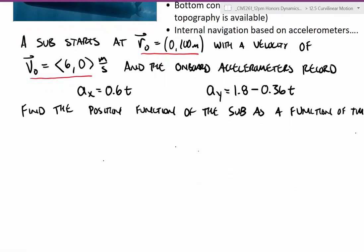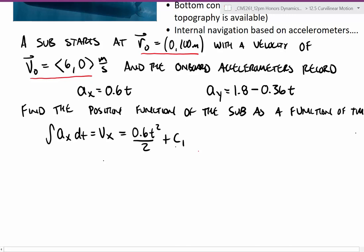So let's go through that process. First of all, we can say that the integral of ax dt is equal to vx. Taking an integral of that ax dt, we end up with 0.6t squared divided by 2. I'm just going to list this integration constant as c1. So this turns out to be our initial velocity, so this is equal to v0x, and that was given as 6 meters per second.